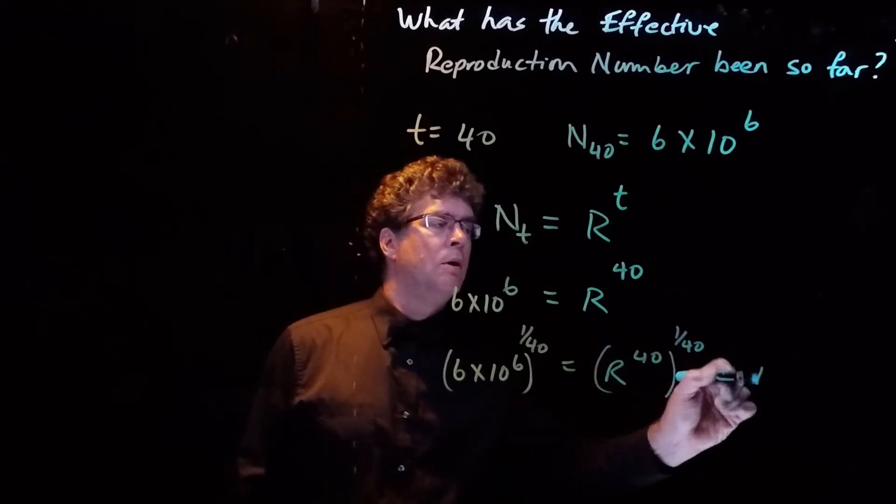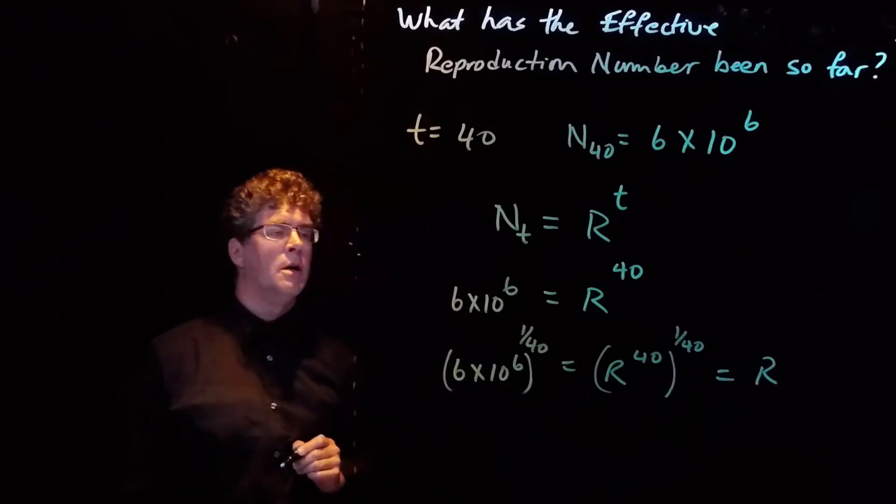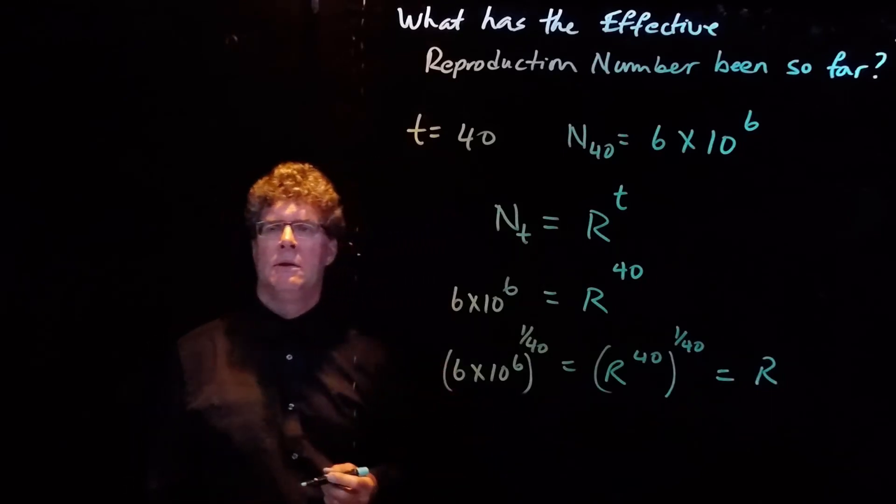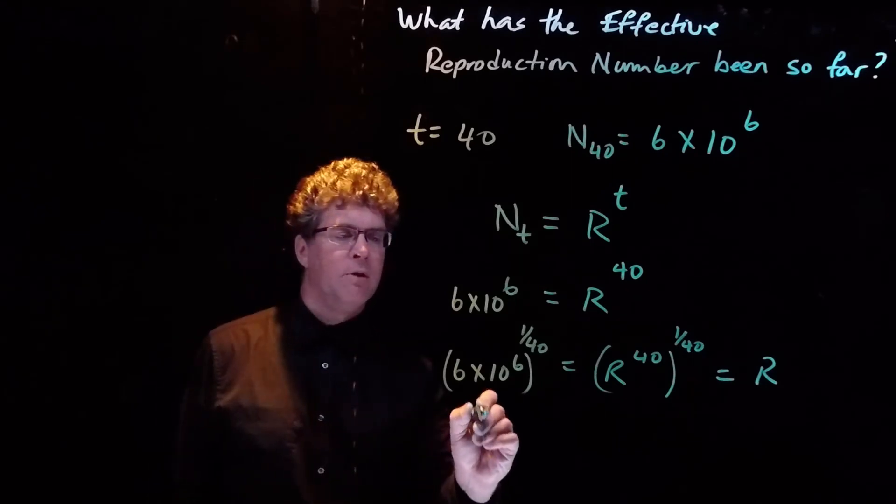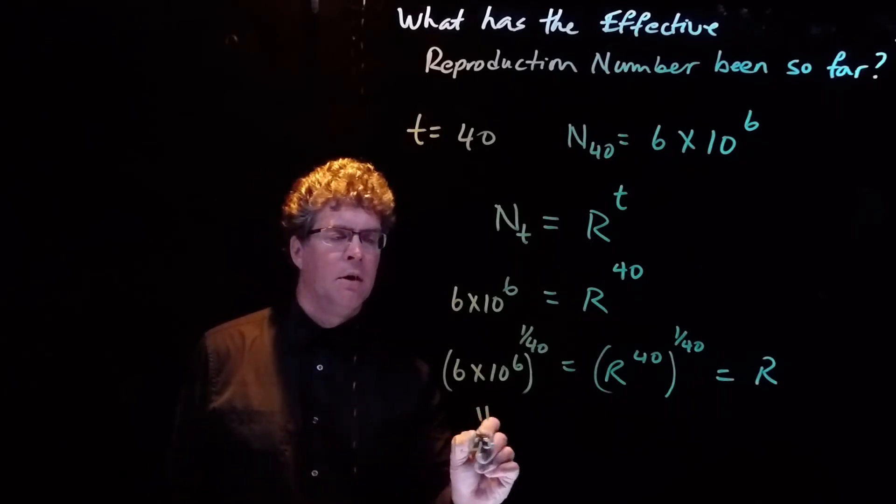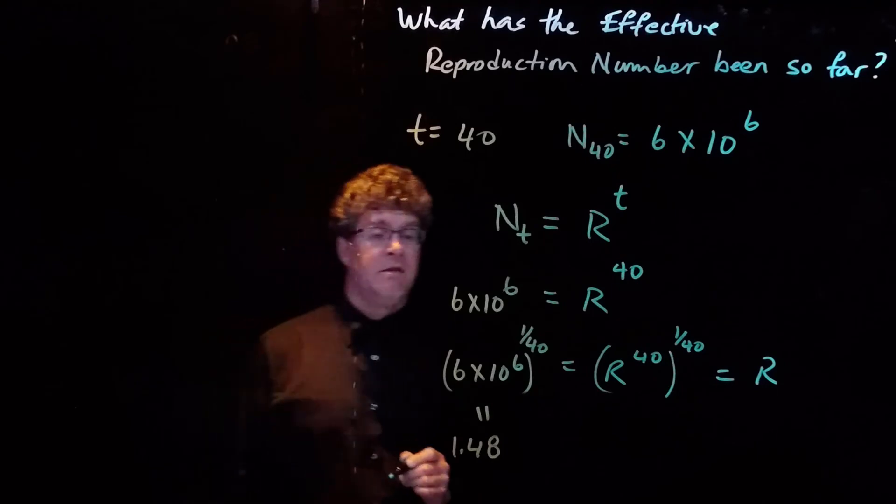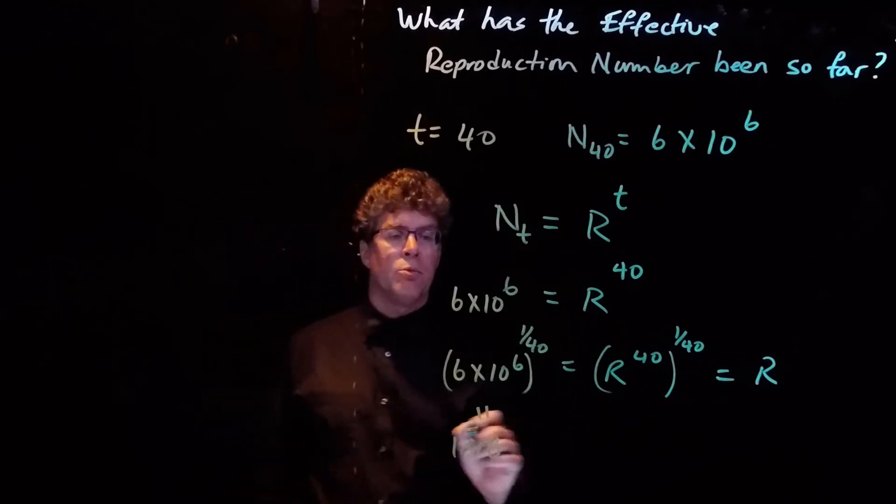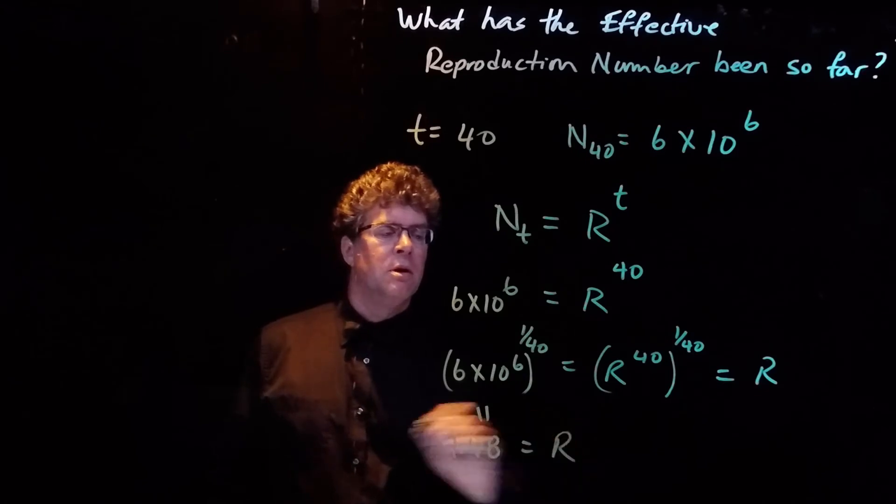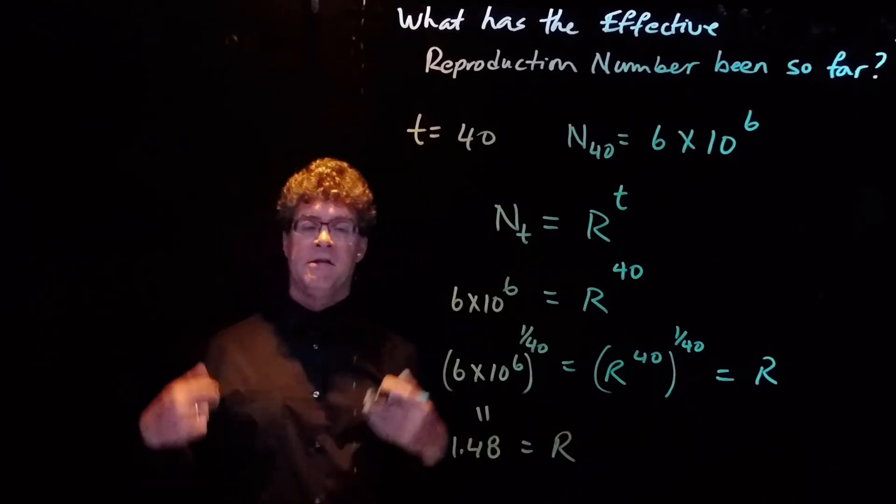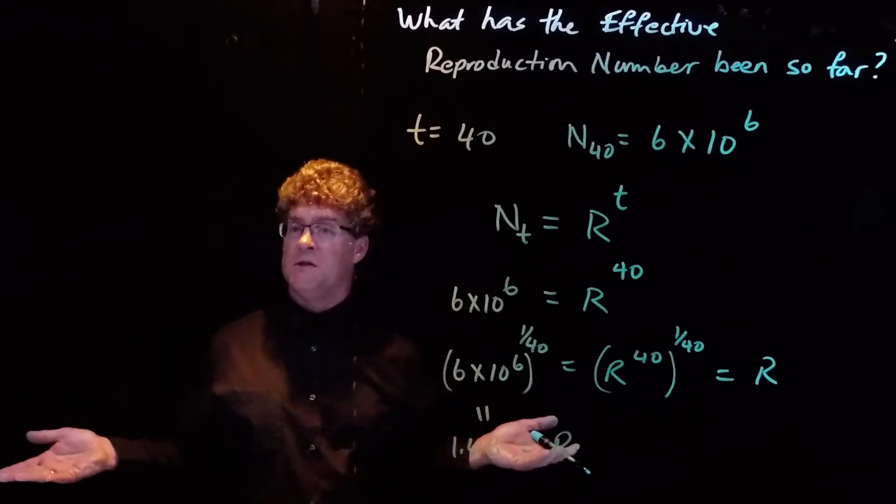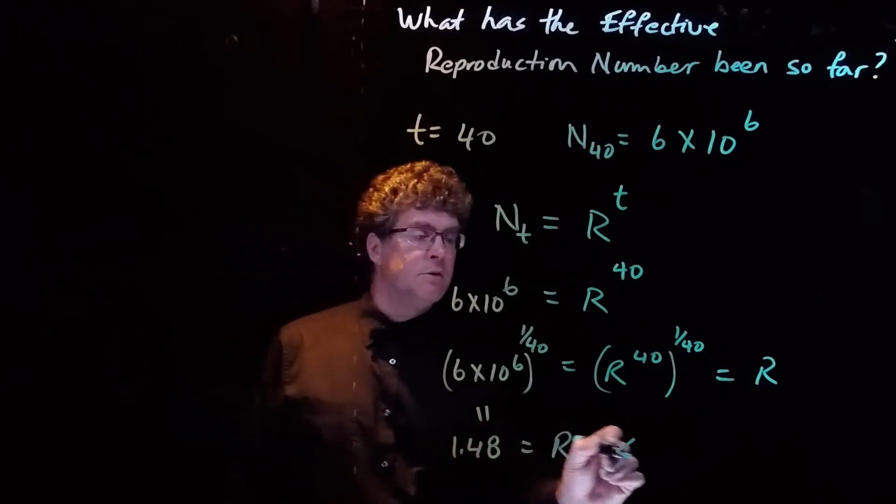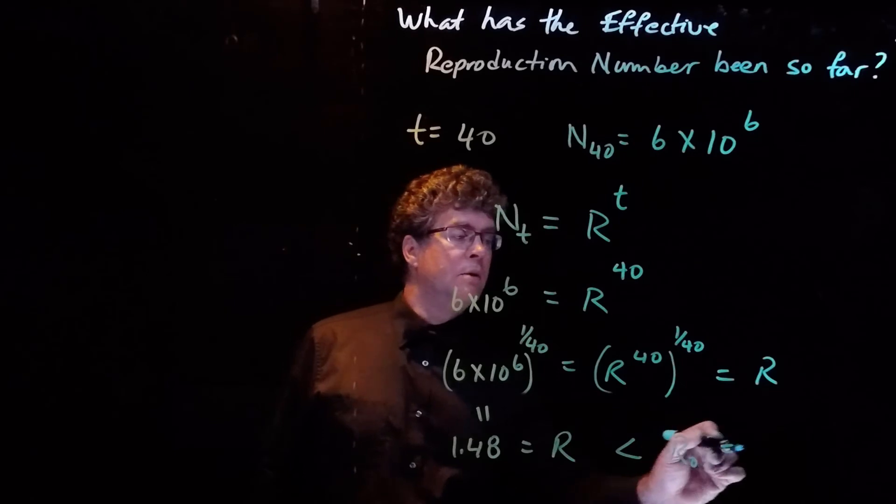And so we take each side to the power 1 over 40. And so we solve for R: 6 million to the 1 over 40 power. And if we put this on the calculator, we find out that this is 1.48. And so 1.48 is our effective reproduction number for COVID-19. It's not R₀, which is 2. It's smaller, so it's less than R₀, which is equal to 2, which means some social distancing has gone on.